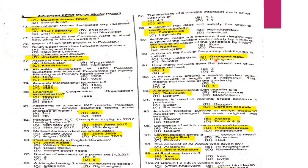MCQ 90: Data in the form of frequency distribution is called grouped data.